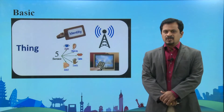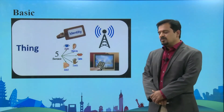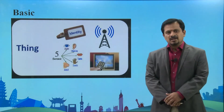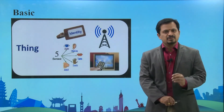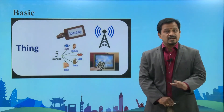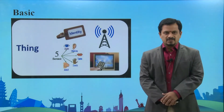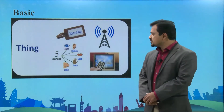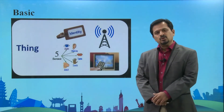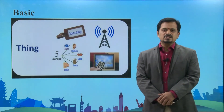If you look at this diagram, normally in any human being we have five senses: visibility, hearing, tasting, touching and feeling, and at last smell. These are all the five senses which are very important for any human being, through which only we can sense or smell anything around us.